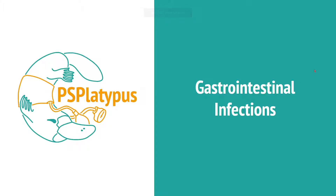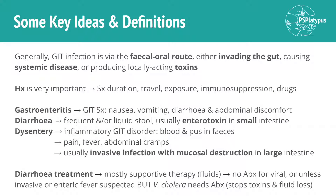Kyle here with PS Platypus, and today we're going to go through some GIT infections. Generally, you're going to be getting a GIT infection via the faecal oral route — so faeces, or a component of faeces, making its way orally — and that'll result in a few different pathologies: invasion of the gut tissue, systemic illness or systemic disease, or the production of locally acting toxins like you might see in food poisoning.